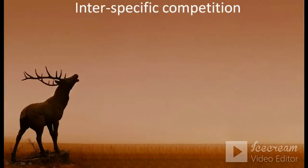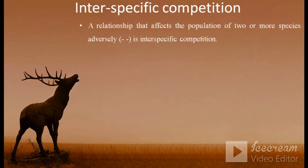So, what is inter-specific competition? Inter-specific competition is a relationship that affects the population of two or more species adversely. That is, both the species get harmed. That's why it is denoted as minus and minus, and it is known as inter-specific competition.